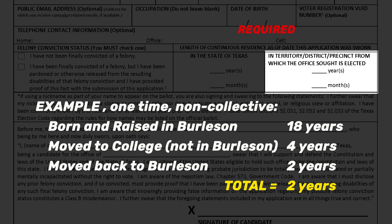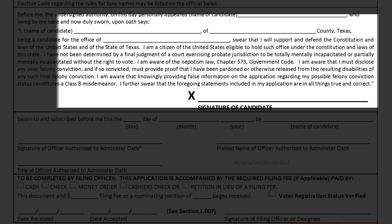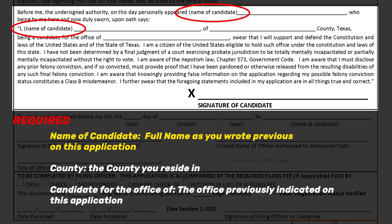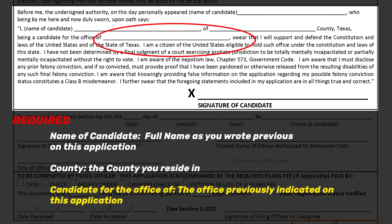An example: if you were born and raised in the City of Burleson for 18 years, moved to college outside of the City for four years, and then moved back to Burleson for two years, the total residence for this application's purpose is two years. The final section is the sworn statement portion of the application. Anywhere noted as 'name of candidate,' put the full name you wrote previously on this application. The county is the county you reside in, and 'candidate for the office of' is the office sought as you wrote previously on this application.